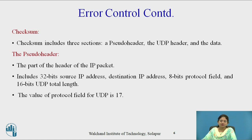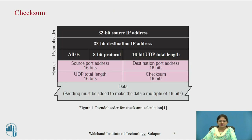Checksum includes three sections: first is the pseudo header, then the UDP header, and the third is data. The pseudo header is part of the IP datagram, which includes the 32-bit source IP address, 32-bit destination IP address, 8-bit protocol field, and 16-bit UDP total length. The value of the protocol field for UDP is 17. In the checksum format, the pseudo header is shown in black, the UDP header in pink, and the gray part is data.